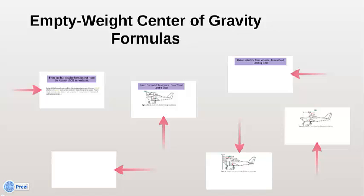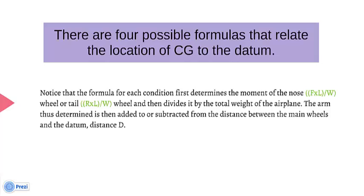Empty Weight Center of Gravity Formulas. A chart like the one in Figure 3-4 helps visualize the weights, arms, and moments when solving an EWCG problem, but it is quicker to determine the EWCG by using formulas and an electronic calculator. There are four possible conditions and formulas that relate the location of CG to the datum.